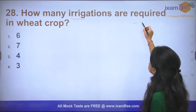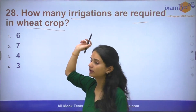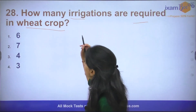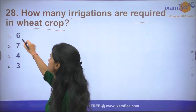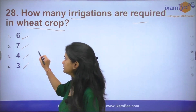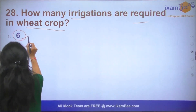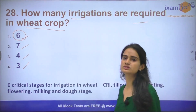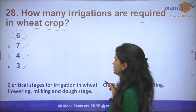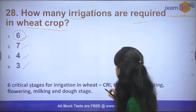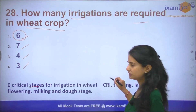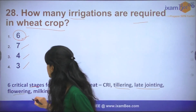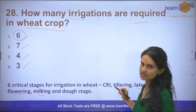Question number 28: How many irrigations are required in the wheat crop? How many critical stages are there for irrigation in wheat? The answer is six. There are six critical stages in wheat crop when irrigation must be given; otherwise, the yield will decrease. These six stages are: CRI (crown root initiation) stage, tillering stage, late jointing stage, flowering stage, milking stage, and dough stage.